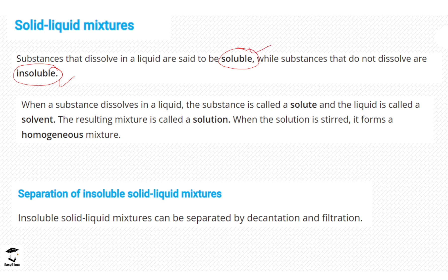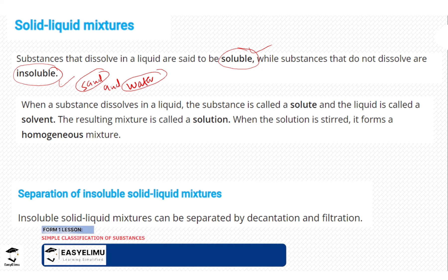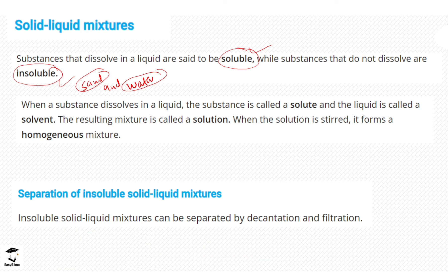When a substance dissolves in a liquid, the substance is called the solute. In our example of tea and sugar, the tea is the solvent and the sugar is the solute. When you mix these two together you form a solution. If the solution is stirred it forms a homogeneous mixture — this is the situation where the solid dissolves in the liquid.